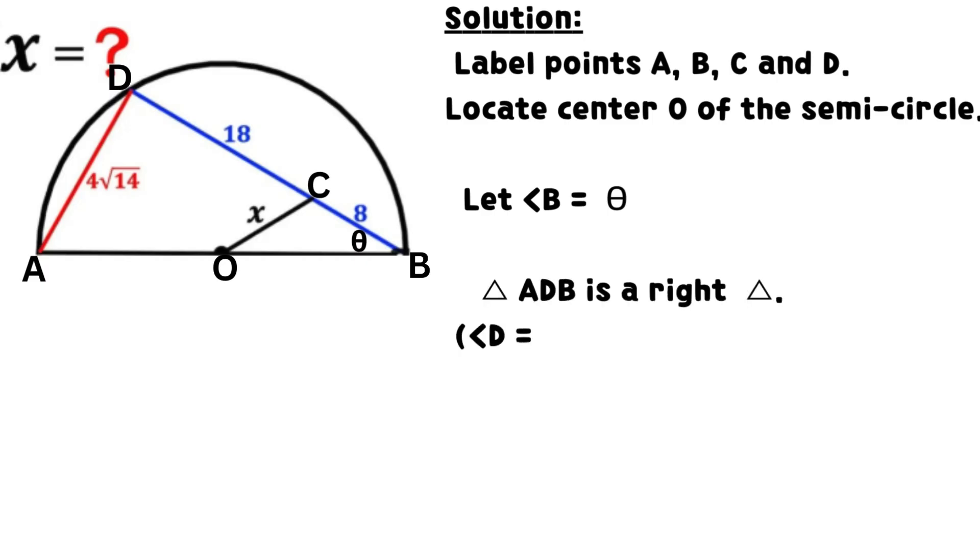Let angle B equals theta. Triangle ADB is a right triangle. Angle D equals 90 degrees because angle in a semicircle equals 90 degrees.